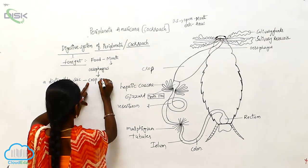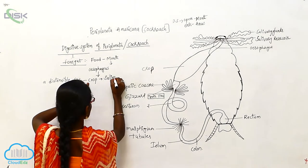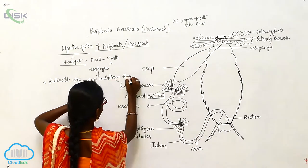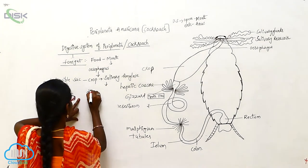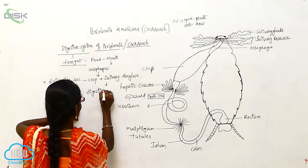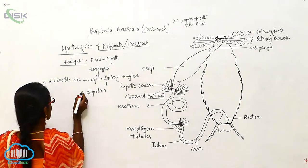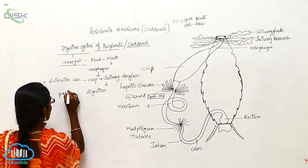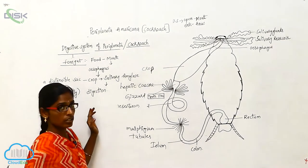In the crop, by the salivary amylase, the food material undergoes digestion. In the crop wall the food material is partially digested.